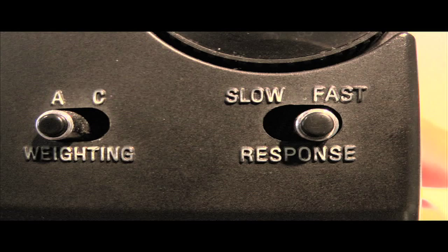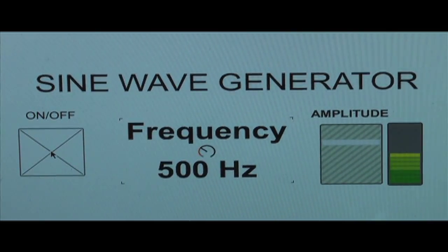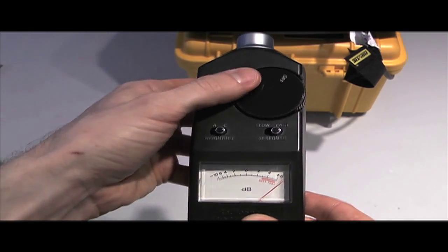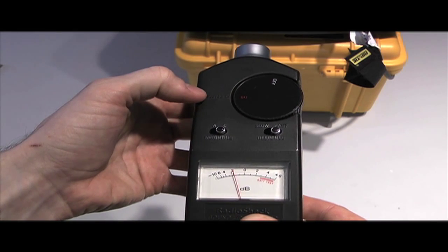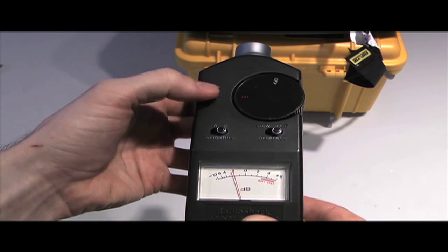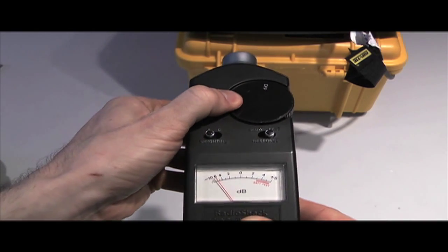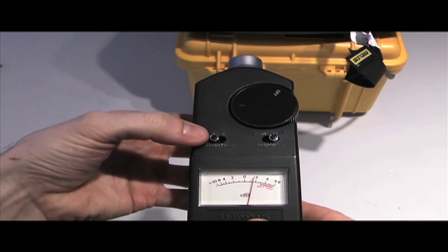The weighting setting on the SPL meter determines how the intensity of different frequencies is measured. If you play a lower frequency — try 500 Hz — and switch over to C weighting, you'll see that it yields a much higher value than it would have on A weighting. This is because C weighting assigns higher values to lower frequencies than A weighting does, which is good if you're testing low or sub audio frequencies.